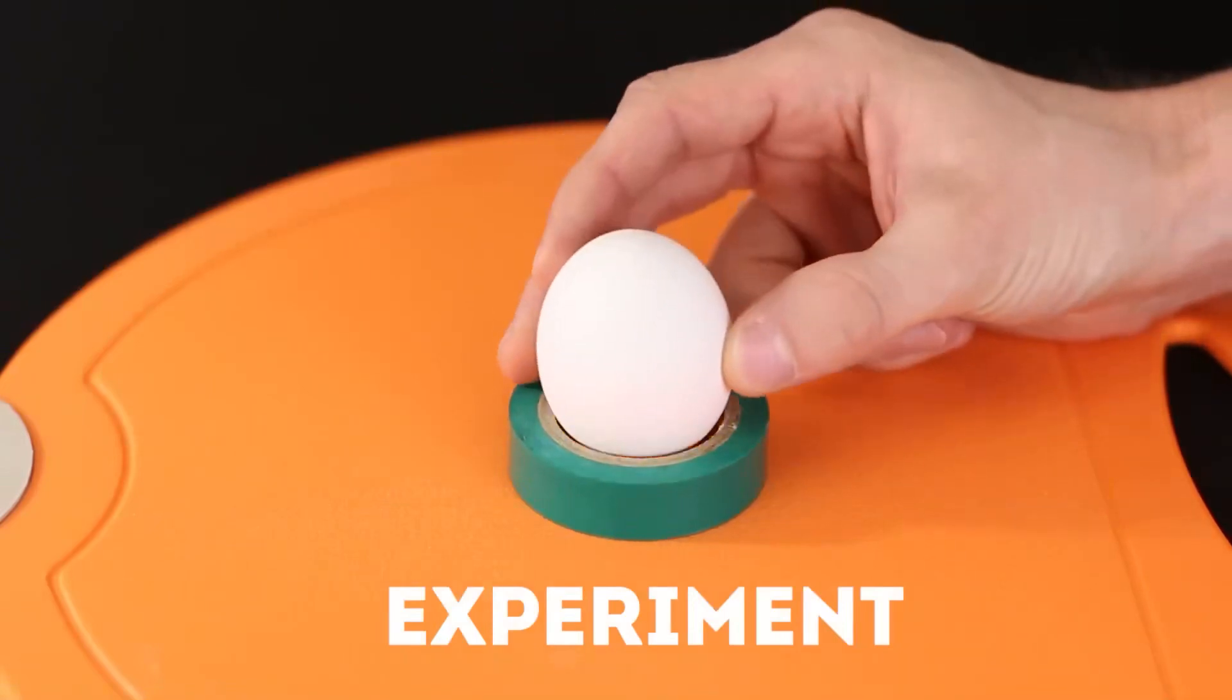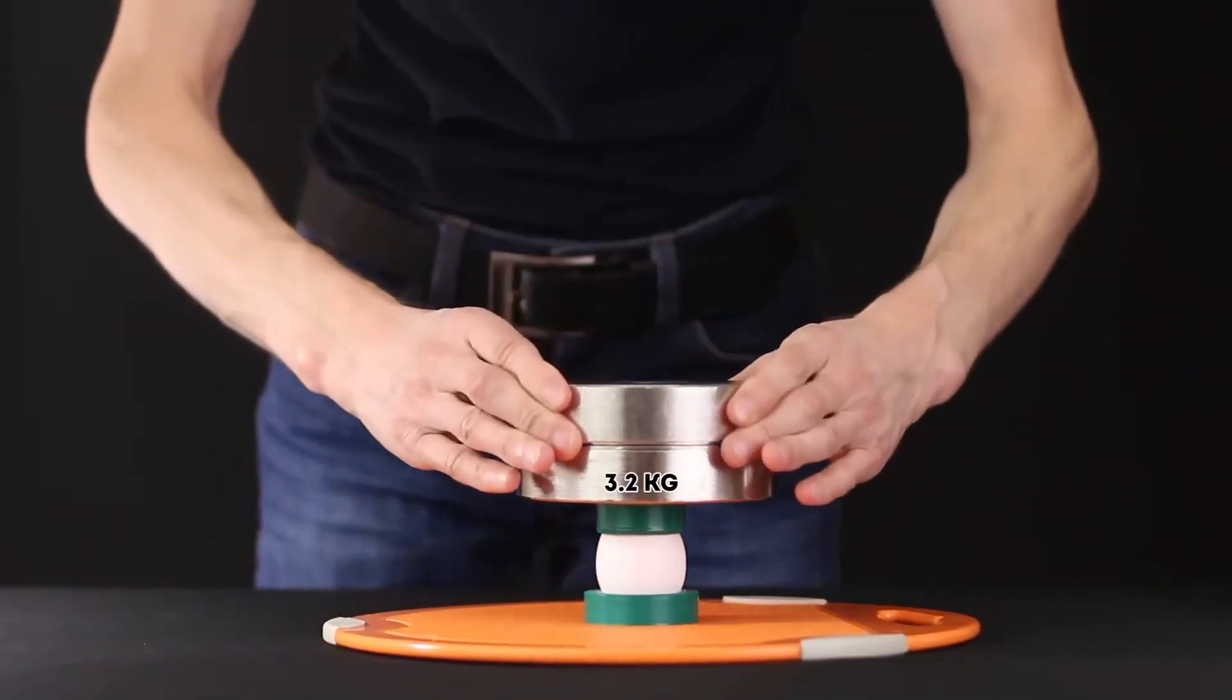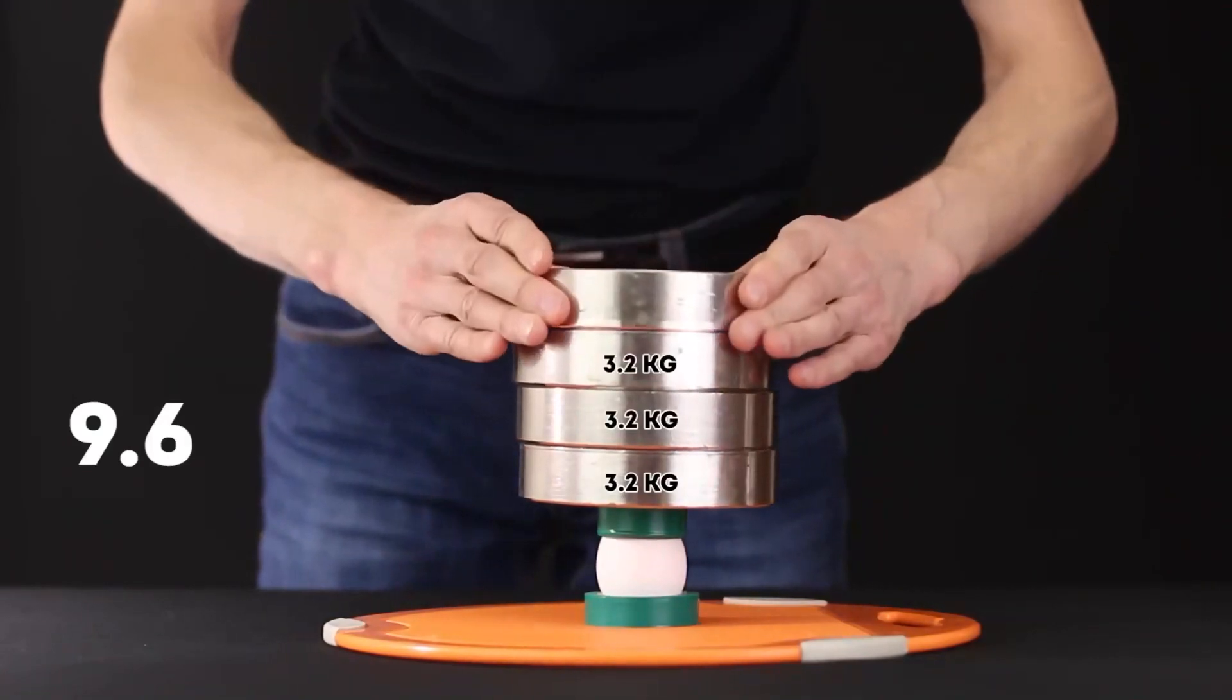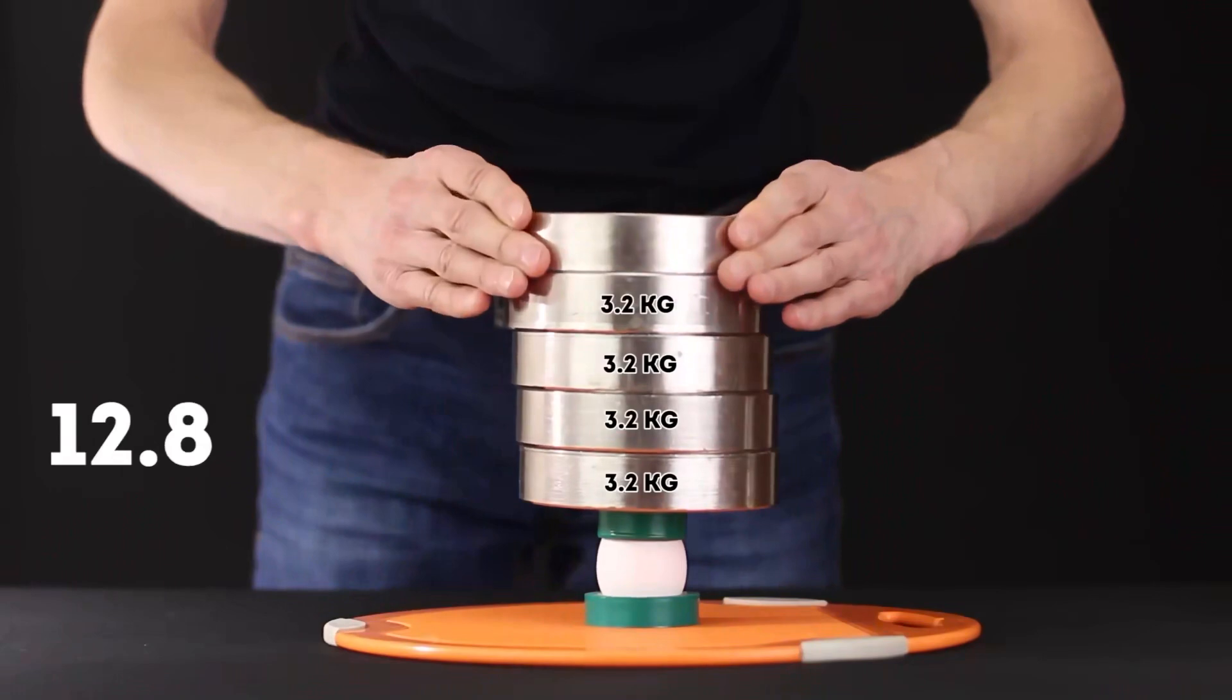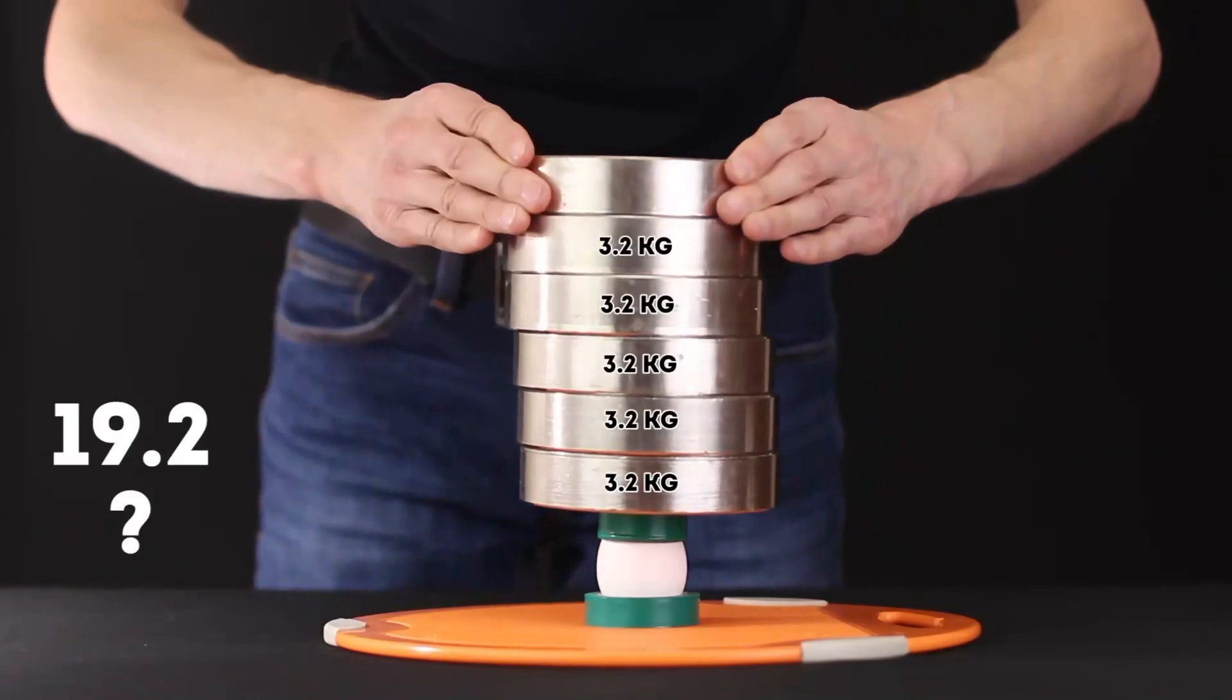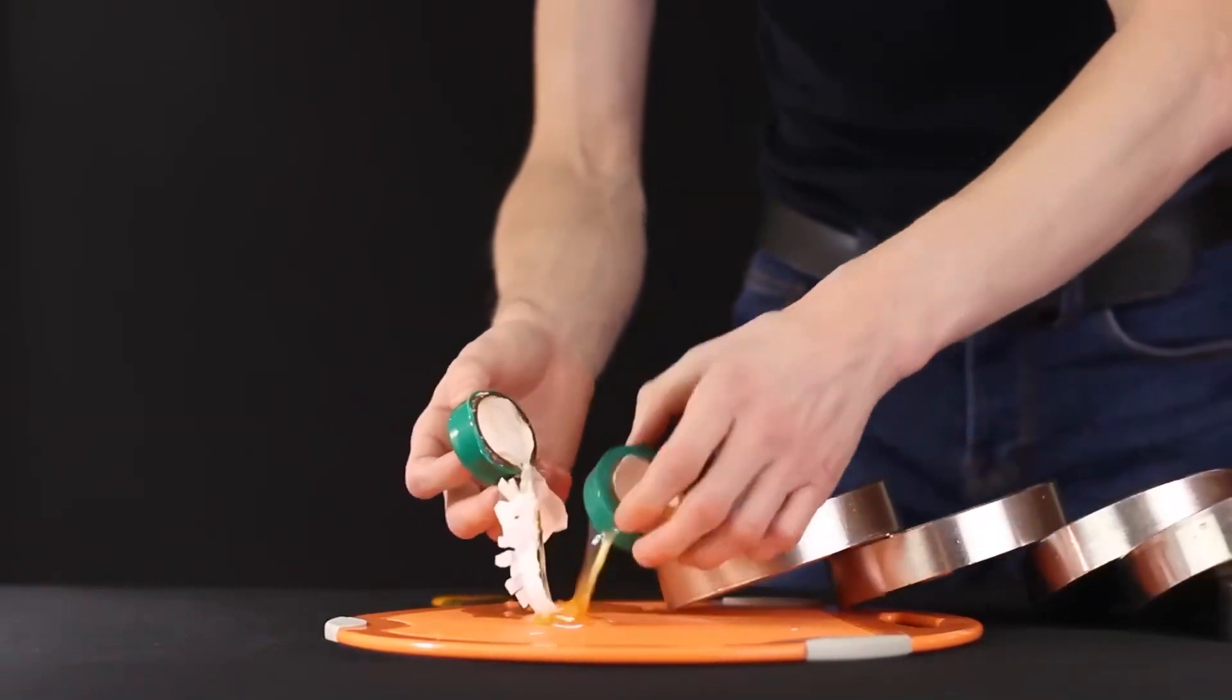Well, at the end, we will conduct a small crash test of an ordinary chicken egg. We will fix the egg on two coils of duct tape and gradually put the barbells weighing 3.2 kilograms on top. Let's see how much of that it can withstand. 3 kilograms, 6 kilograms, 9 kilograms. Wow! I didn't think it could withstand so much. 12.8 kilograms. Meanwhile, the weight is as much as 16 kilograms. 19 kilograms turned out to be an unbearable burden for our egg. It turns out the maximum load that an egg can withstand is somewhere between 16 and 19 kilograms.